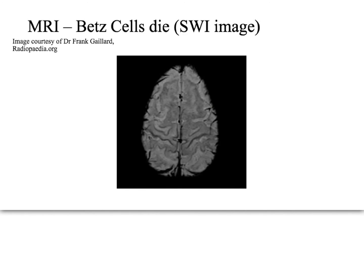On a susceptibility weighted image, or SWI, you can see how the Betz cells have died. There is a rim of dark area in the central sulcus that is slightly more prominent than it should be. The combination of these two findings — the FLAIR signal along the corticospinal tract and the dark rim on SWI — would make ALS an extremely likely diagnosis based on MRI alone.